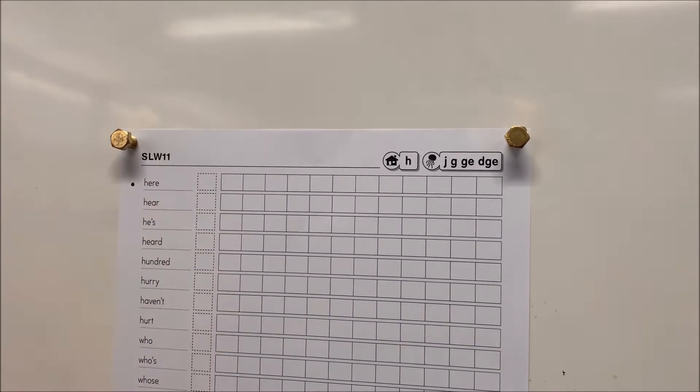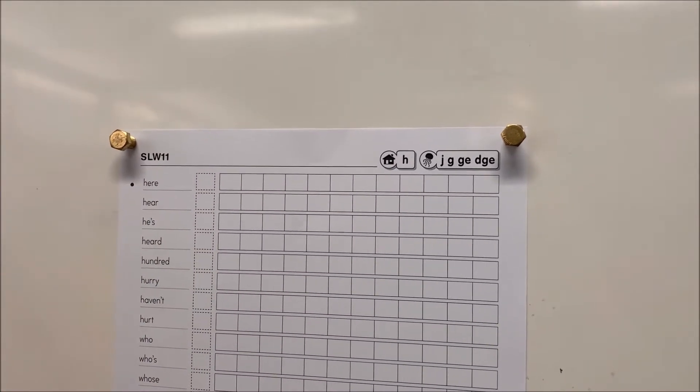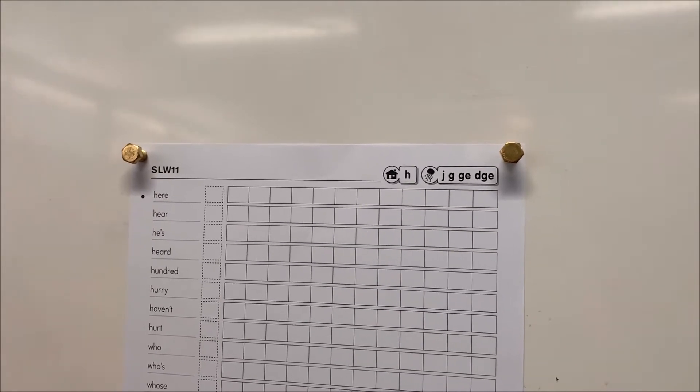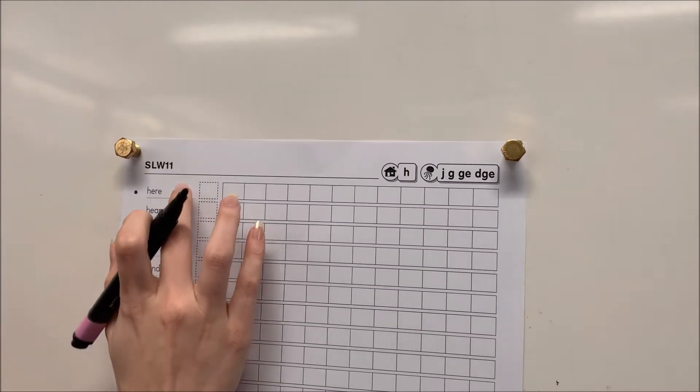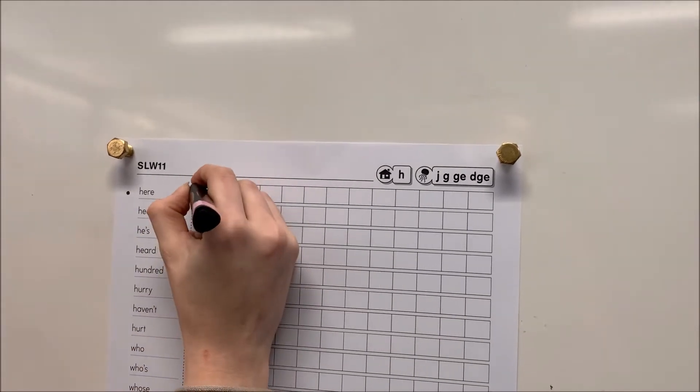When I say it out loud—here, here, hear—I can hear two sounds. So in my dotted box, I'm going to write the number two.